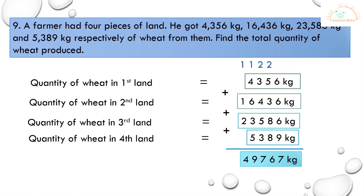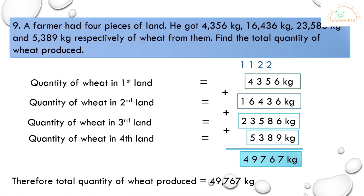Performing the column addition of 4,356 + 16,436 + 23,586 + 5,389: units column gives 27, write 7 carry 2; tens column gives 26, write 6 carry 2; hundreds column gives 17, write 7 carry 1; thousands column gives 49, giving us the answer 49,767 kilos. The final statement: therefore, total quantity of wheat produced is equal to 49,767 kilos.